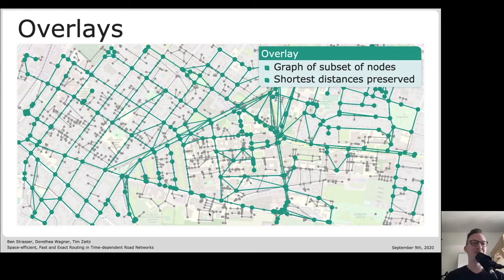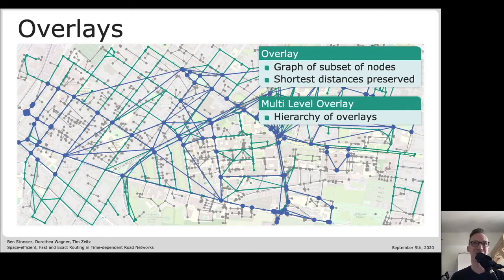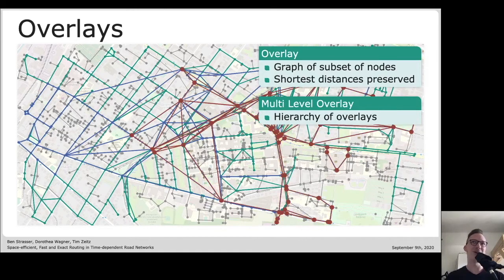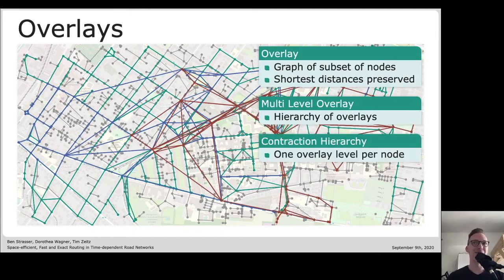This becomes even more useful when we start considering multilevel overlays - overlays on top of overlays with even more important nodes. If we take this idea to the very extreme where we have one overlay graph for each individual node basically, then we end up with a very effective and quite popular speed up technique for routing in road networks: contraction hierarchies.